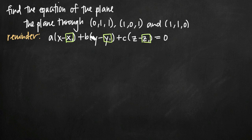Now, since we're doing this in vector calculus, we're going to treat a, b, and c as direction numbers. The most convenient way to find these direction numbers is to find the normal vector to the plane, because the normal vector is comprised of three components which we substitute in for a, b, and c. To find the normal vector, we first need to find two vectors that define the plane, then take their cross product. When we have the normal vector, we plug its three components in for a, b, and c.